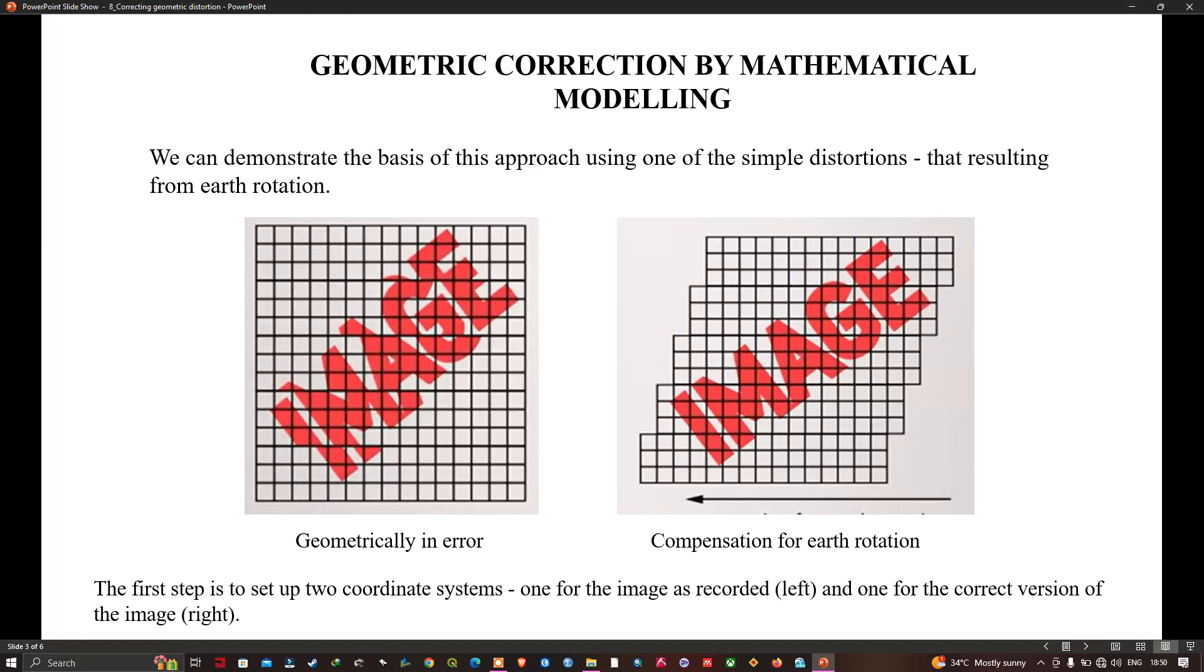Here on the left side, the image is geometrically in error compared to the right which has compensation for the earth rotation. To start the process of correction, we need to define two coordinate systems: one for the image as recorded and one for the corrected version.